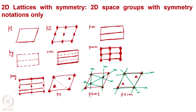Why do we need to know all these? Because in 3 dimensions also we have space groups of this kind. The location of the mirror plane changes the 3-dimensional orientation or arrangement of molecules in those lattices and gives rise to two different crystal structures.